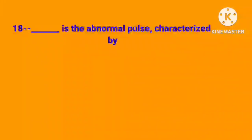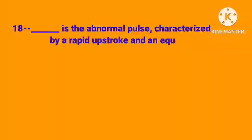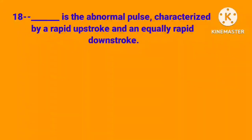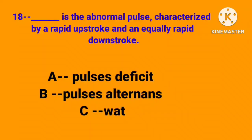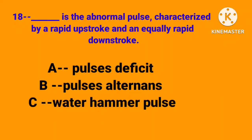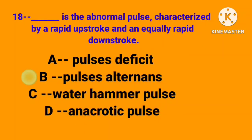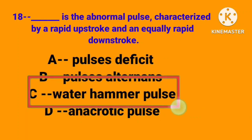___ is the abnormal pulse characterized by a rapid upstroke and an equally rapid downstroke. Option A: pulse deficit, B: pulsus alternans, C: water hammer pulse, D: anacrotic pulse. Correct answer is option C, water hammer pulse.